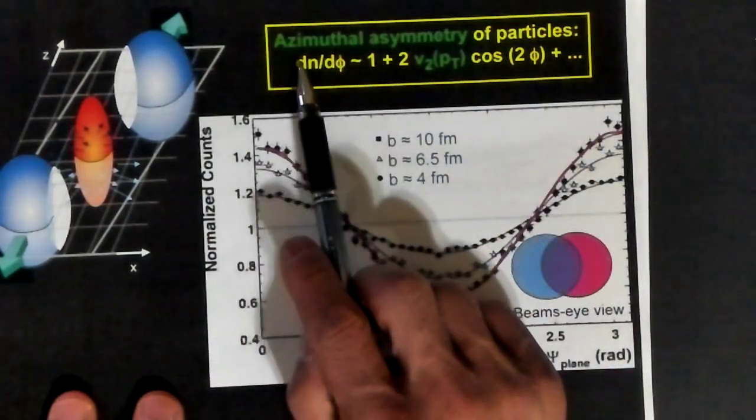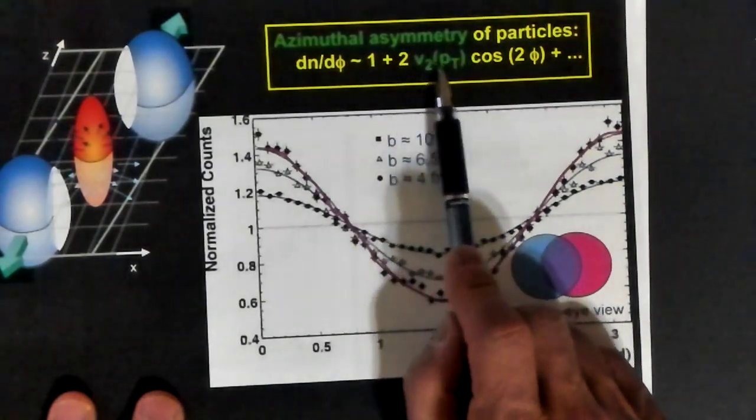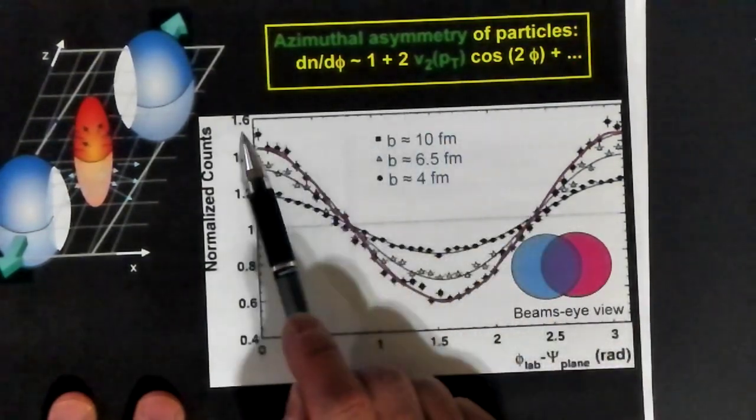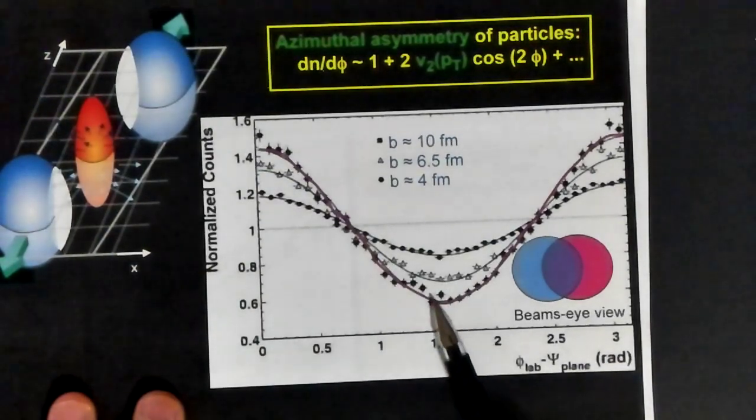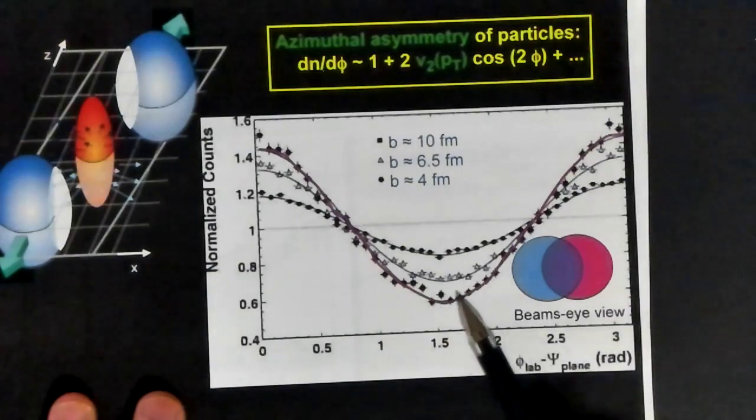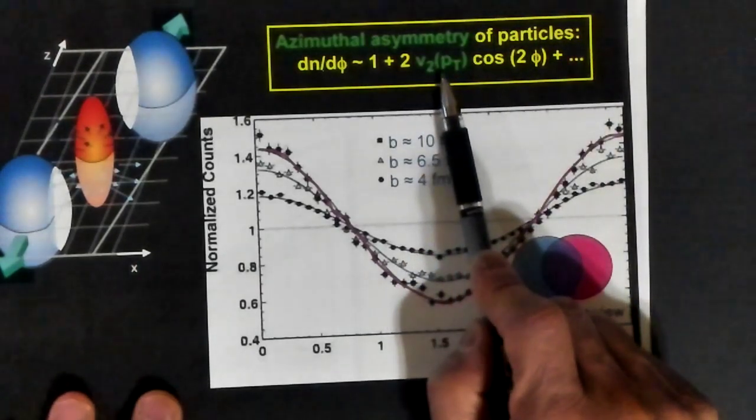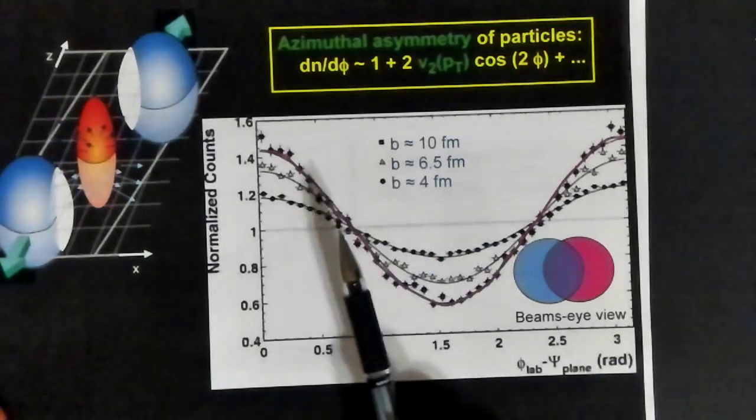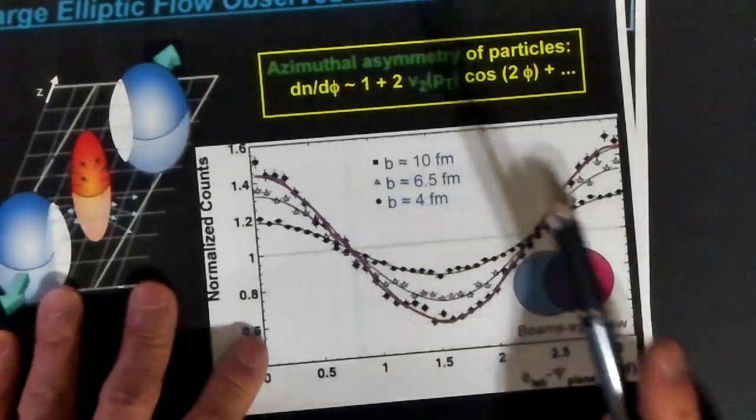We can write this azimuthal dependence as some constant plus two times some coefficient that we call V2 times the cosine of two times phi. This has that pattern where there's a maximum at phi equals zero, a minimum at phi equal to 90, or pi over two radians, and then a maximum again at 180, or phi equal to pi radians. This V2 will depend on the amount of transverse momentum in this collision.